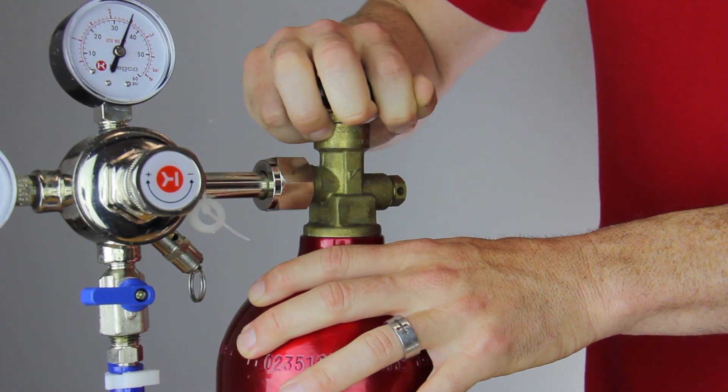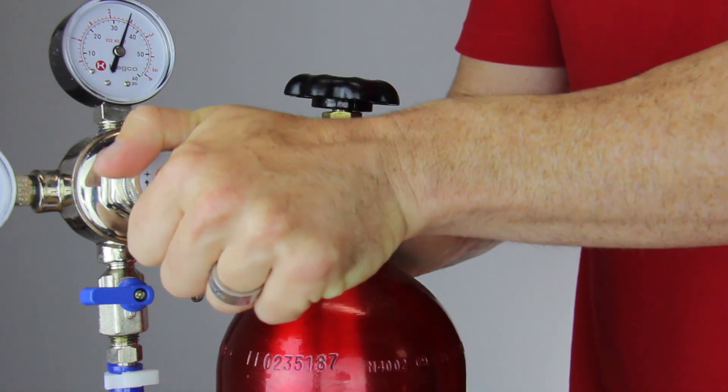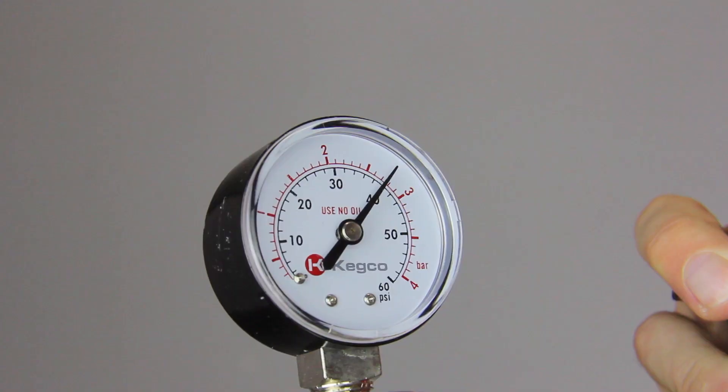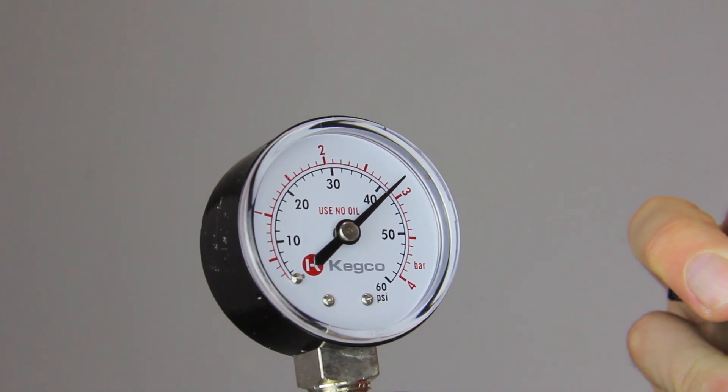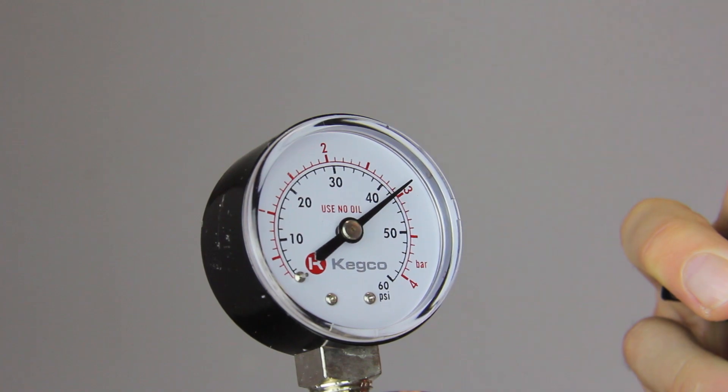Open the valve on the CO2 tank but leave the valve on the CO2 regulator closed. Depending on the type of liquid you are carbonating and your desired level of fizziness, you will need to adjust the pressure adjustment knob on your regulator until the top gauge displays between 35 and 50 psi.